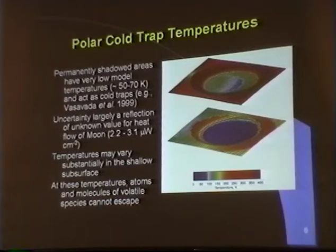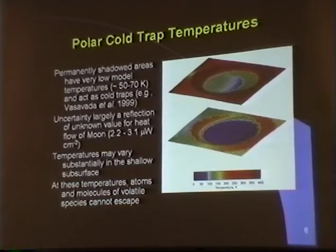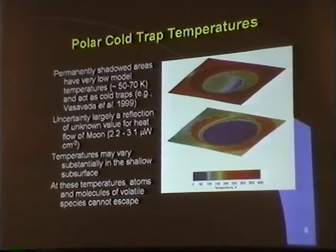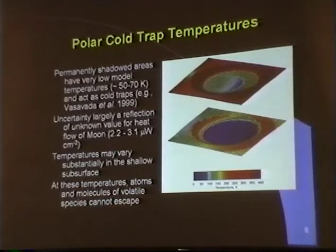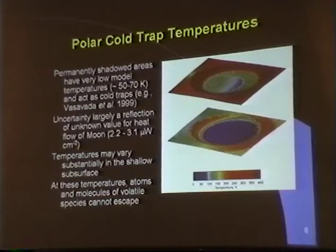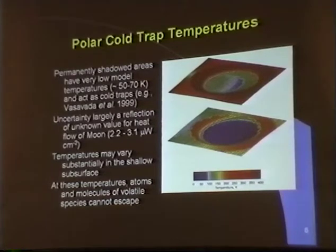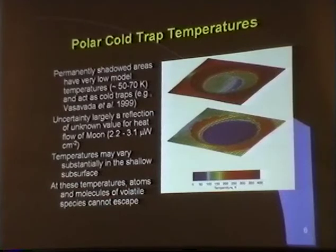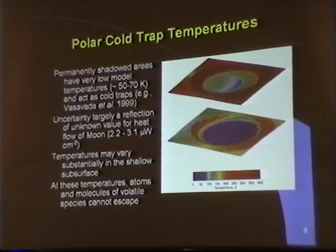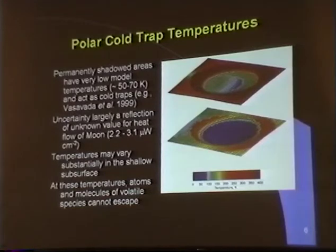The dark areas get no thermal energy except from two sources: space — the 3-degree background radiation — and the heat flow of the moon, estimated from Apollo 17 and 15 measurements at 2 to 3 microwatts per square centimeter. Going through the calculations, a cold trap — a dark area that never sees sunlight — might be as cold as 50 Kelvin, or as warm as 90 Kelvin. Anything below 100 Kelvin is what we call a cold trap. If a volatile element gets into one of these cold traps, there's no known physical process to remove it. It's there forever. Even adding atoms and molecules over billions of years at an extremely slow rate equals a finite amount of material.